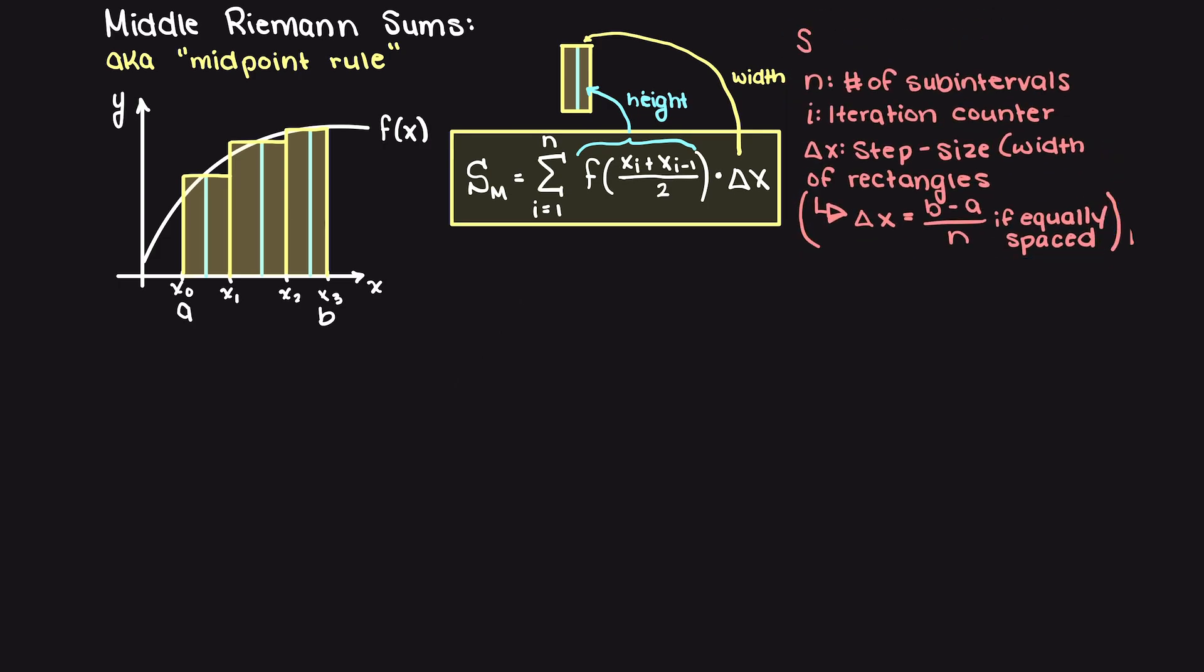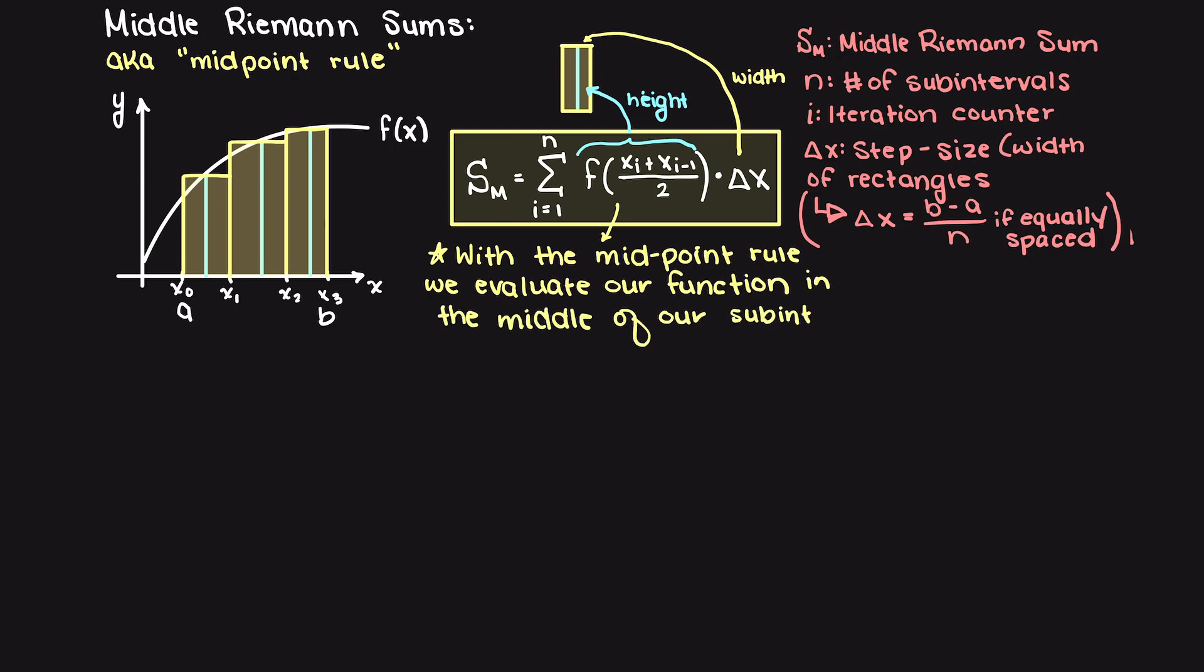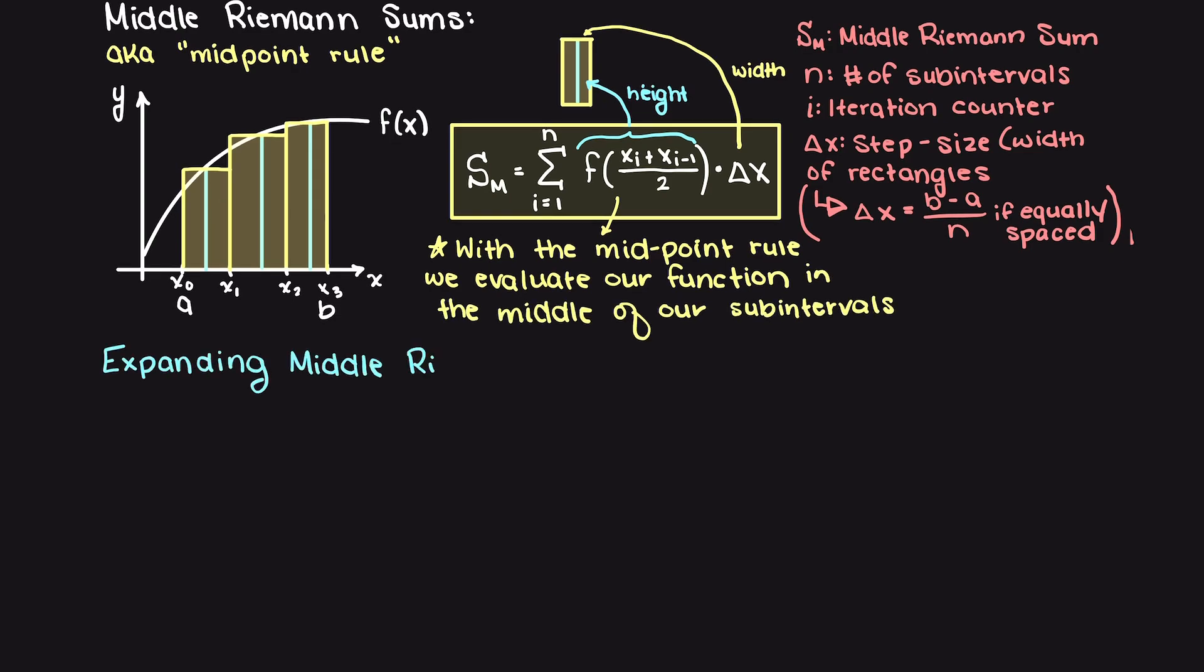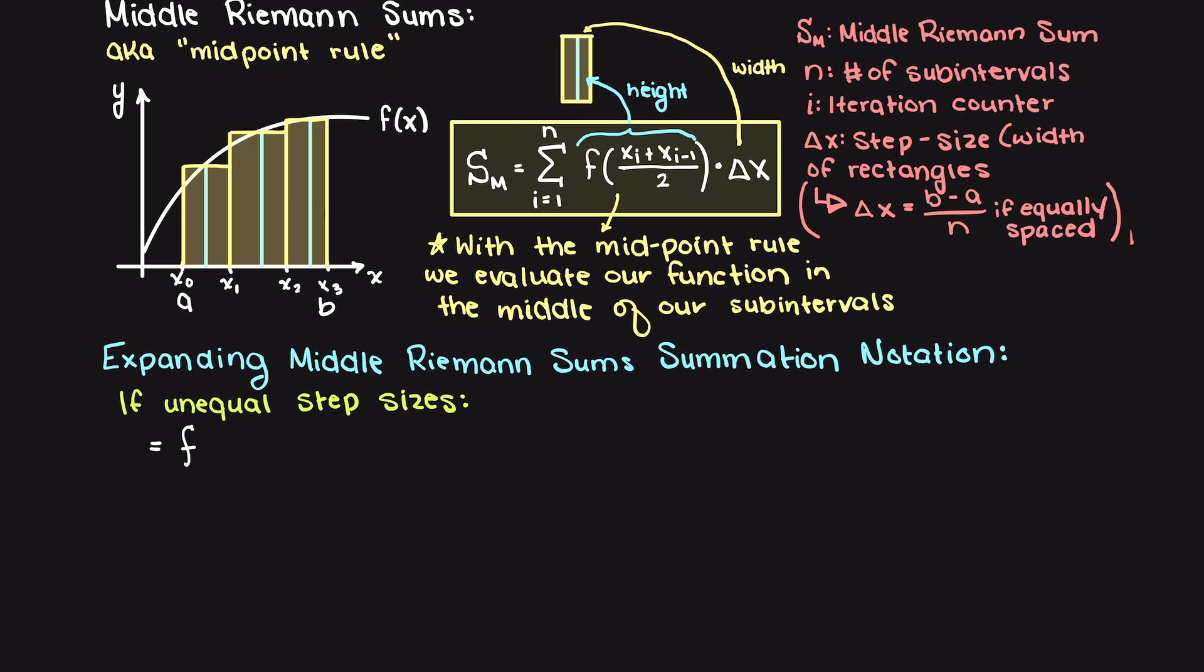Writing out our general middle Riemann sum formula, you can see that we are now using the midpoint, so xi plus xi minus 1 divided by 2. Now let's write out the equation for middle Riemann sums if we have unequal step sizes just like we did for the other ones.